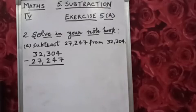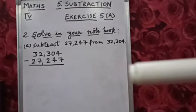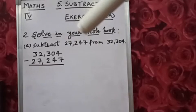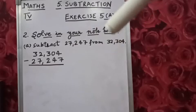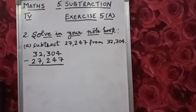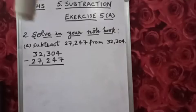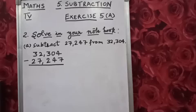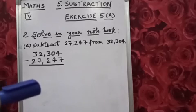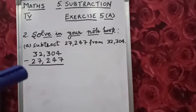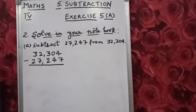So what does it mean? It means you have to subtract 27,247 from 32,304. So you will write 32,304 on top because it is bigger and it is written after 'from'. Downward we will write 27,247 and we will do the minus.